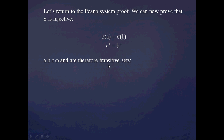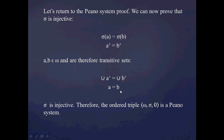They are therefore transitive sets, because we've just shown that all natural numbers are transitive sets. So we can use that theorem we just proved. If these two sets are equal, then their unions should also be equal. Taking the union of both sides, the union of a+ equals the union of b+, which gets us to the conclusion that a equals b. So we started with sigma(a) = sigma(b) and shown that a = b. Therefore sigma is injective, and the ordered triple (omega, sigma, zero) is a Peano system.